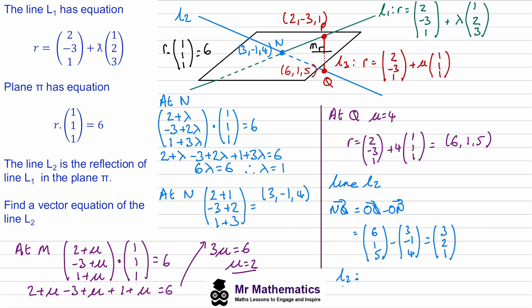Finally, the equation of L2 is a position vector — I'm choosing point N — plus t times the direction vector three, two, one. Thank you very much for watching. I hope you found that useful. If you did, please like and subscribe, and you can download the full lesson from my website mrmathematics.com — I'll leave a link in the description below.